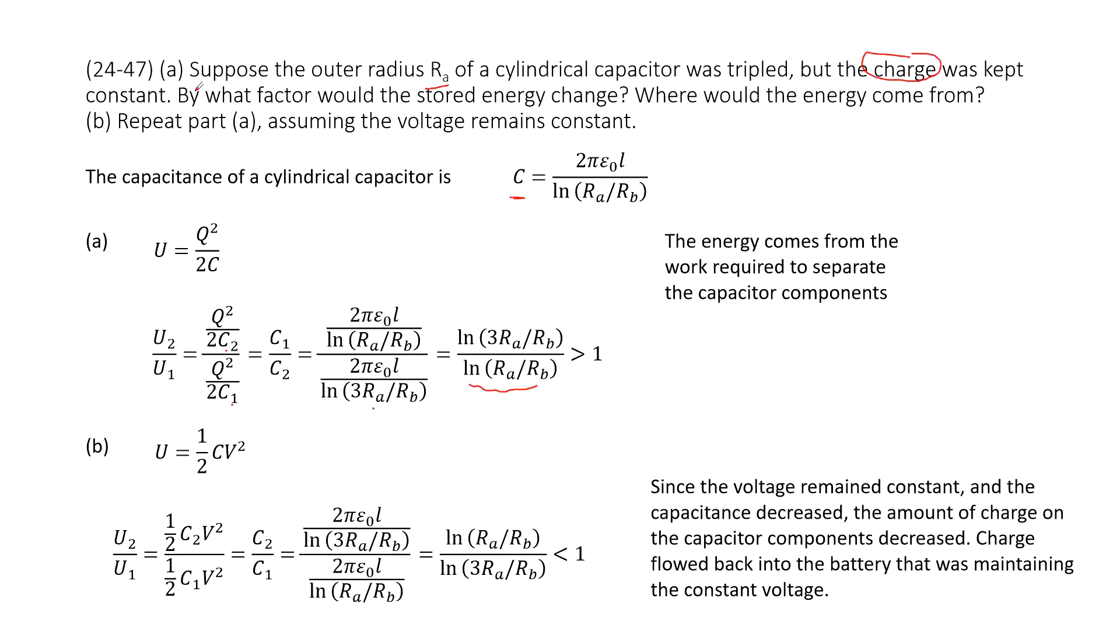The next one asks you to repeat part A, but this time we consider the voltage is constant. Very straightforward. When we consider the voltage and the electric energy, we use the equation one half cv squared.